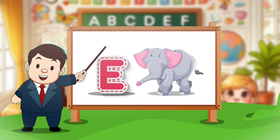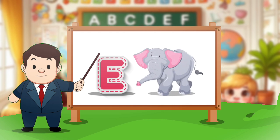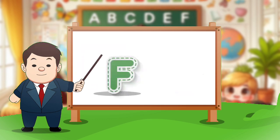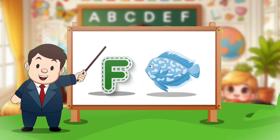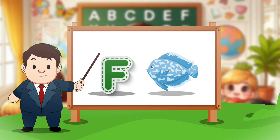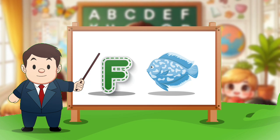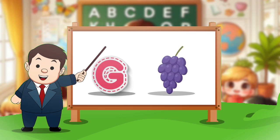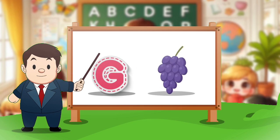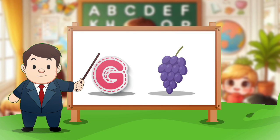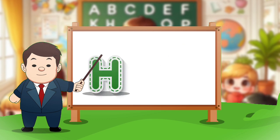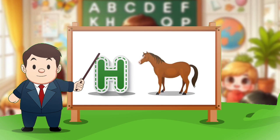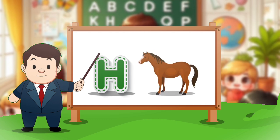E. E for elephant. F. F for face. G. G for crab. H. H for horse.